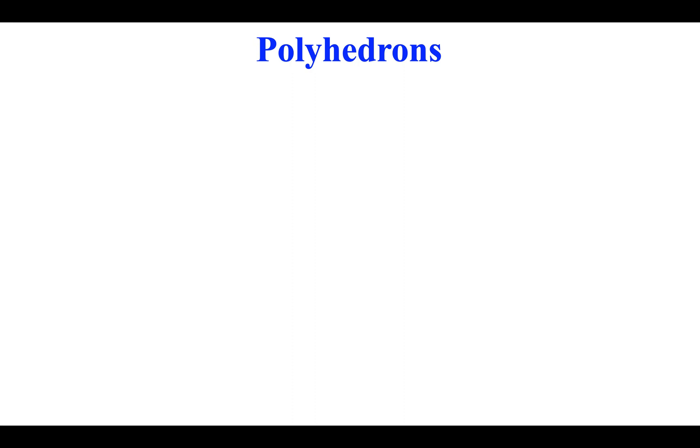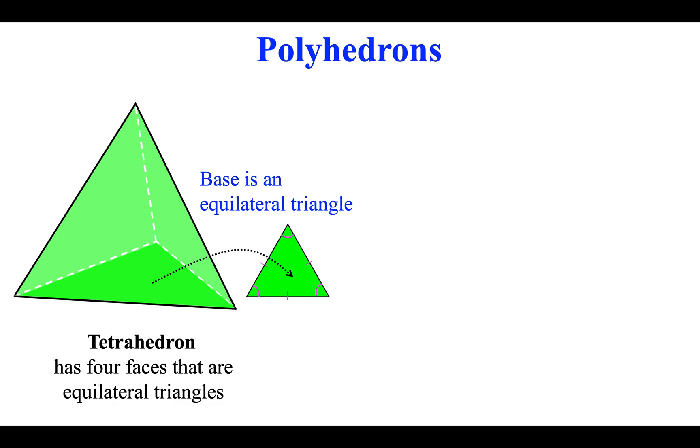Polyhedrons. Tetrahedron has four faces that are equilateral triangles.